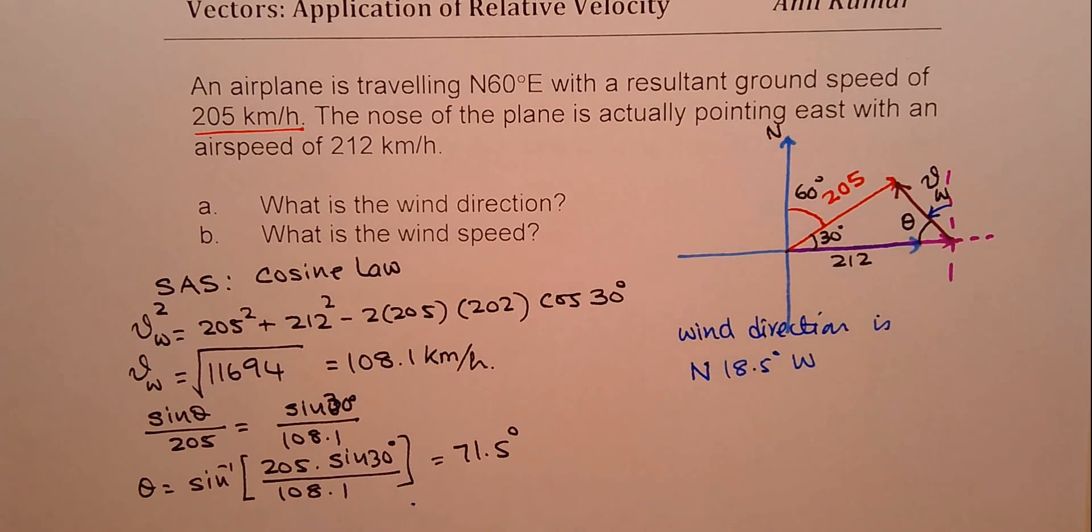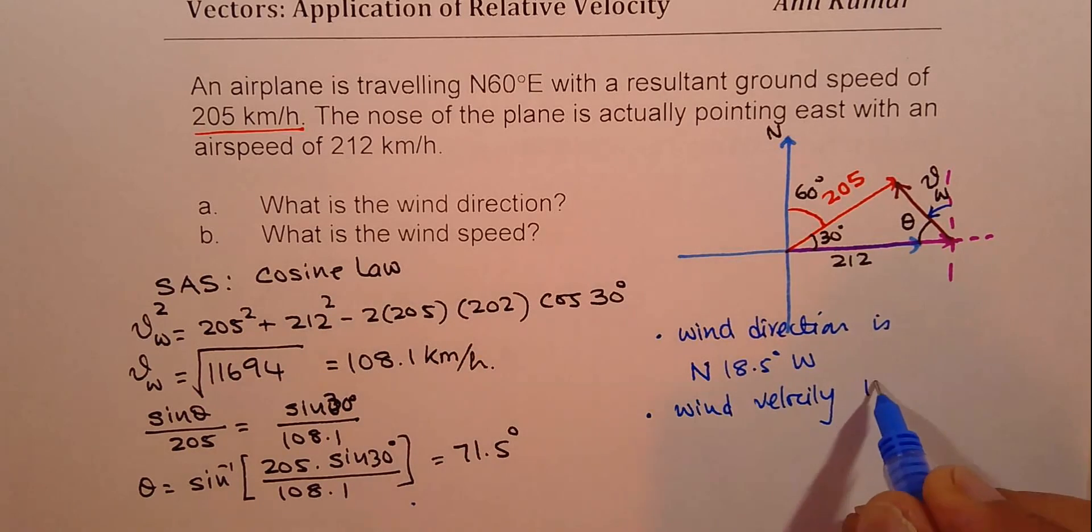It doesn't make sense, right? So that becomes the wind direction. And we know wind velocity is 108.1 kilometers per hour.